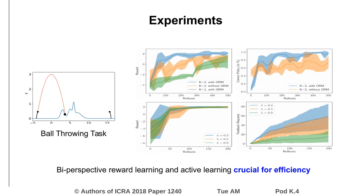We first demonstrated the merits of our approach on a ball-throwing task, where the aim is to hit the goal position in the middle, using either the robot on the left or on the right. As shown in the top row, using a hierarchical approach with a separate outcome reward model leads to fast and stable learning. In the bottom row, we show that we can reduce the number of feedback requests significantly through active learning.